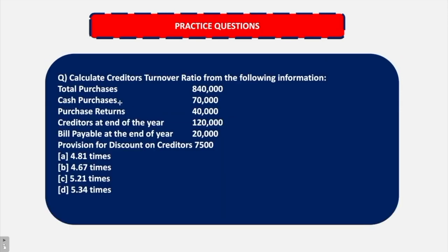Let's come to a practical question. Calculate creditors turnover ratio from the following information. So first of all, let's write down the acronym of creditors turnover ratio. So we have trade receivable turnover ratio and trade payable turnover ratio. Trade payable turnover ratio is also called as creditors turnover ratio. And the acronym is CPP for this.